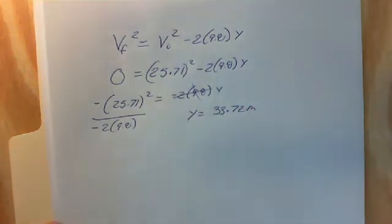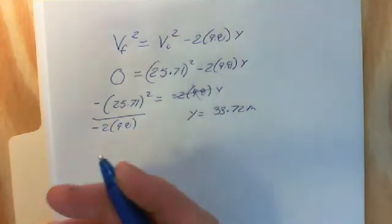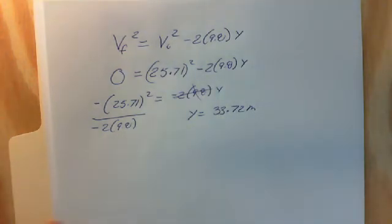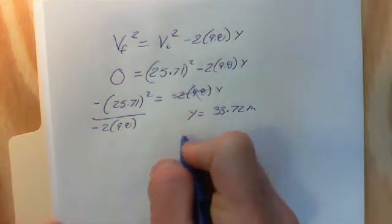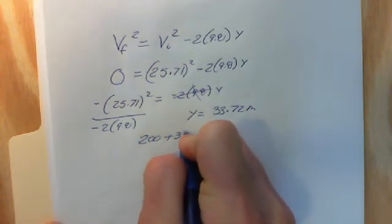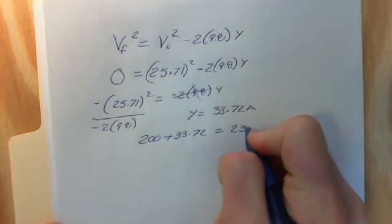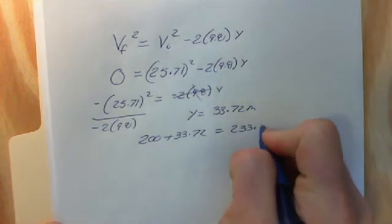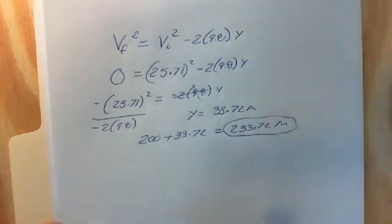You will find that y is equal to about 33.72 meters. That 33.72 is the distance from the top of the cliff to the maximum height. So from the valley floor, if the question asks what is the maximum height from the valley floor, you just add 200 onto it. So 200 plus 33.72 gives a value of 233.72 meters as our maximum height from the valley floor.